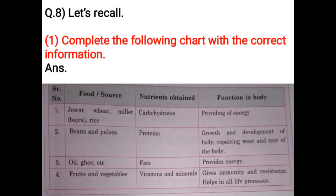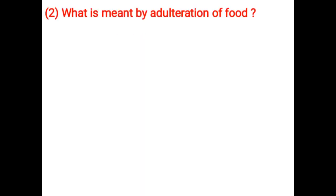Let's recall — complete the following chart. Food source: jowar, wheat, millet, bajra, rice — nutrients obtained: carbohydrates — function: providing energy. Food source: beans and pulses — nutrients: proteins — function: growth and development of body, repairing wear and tear. Food source: oil, ghee — nutrients: fats — function: provides energy. Food source: fruits and vegetables — nutrients: vitamins and minerals — function: immunity and resistance, helps in all life processes.